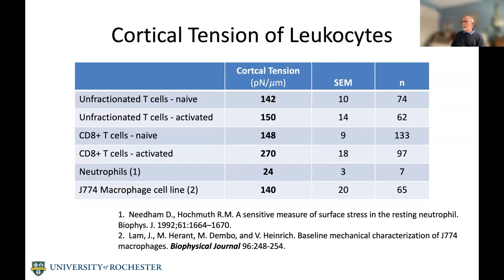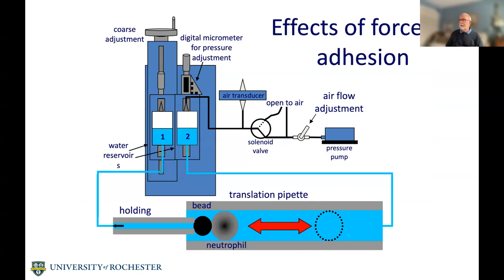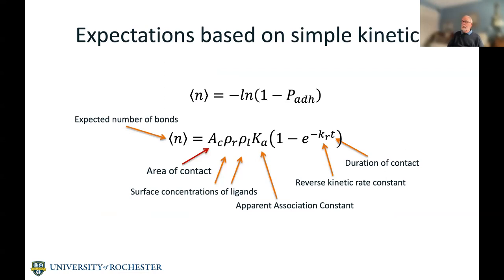The next question is: how do these mechanical properties affect the adhesive process? We developed a system with two pressure reservoirs — one applying suction to a pipette holding a bead layered with endothelial cell ligands, and another applying pressure to a neutrophil inside a larger pipette, acting like a piston. By controlling the pressure, we could control the force with which the cell contacted the bead. We can open a valve, apply suction, reverse the pressure, pull the cell away, and look for adhesive events. We can control contact time and force, and we wanted to look at the kinetics of bond formation at that interface.